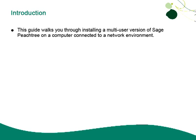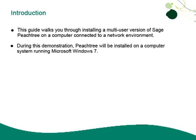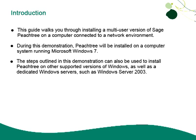This guide provides a walkthrough of installing a multi-user version of Sage Peachtree on a computer connected to a peer-to-peer network environment. During this demonstration, Peachtree will be installed on a computer system running Microsoft Windows 7. However, the steps outlined here can also be used to install Peachtree on other supported versions of Windows, as well as dedicated Windows servers, such as Windows Server 2003.